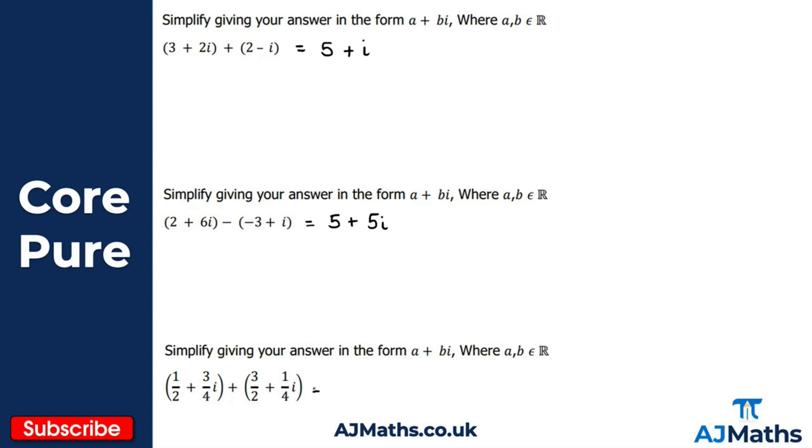And then for this third one here, it looks a little bit more complicated. We've got fractions but there's nothing too crazy going on, we're just adding fractions. So a half here plus 3 over 2, because they've got a common denominator that would just give me 4 over 2, which we can simplify to give us 2. And then 3 over 4i plus 1 over 4i would give me 4 over 4i, which is simply i. So we get 2 plus i there.